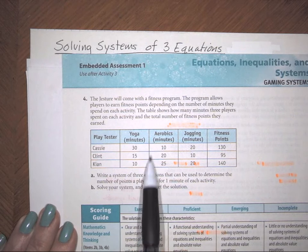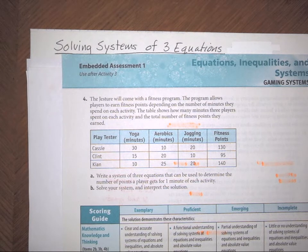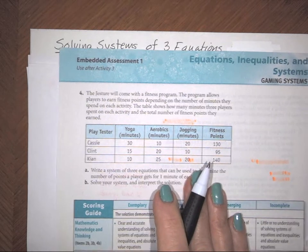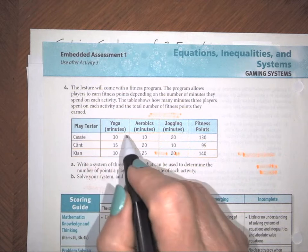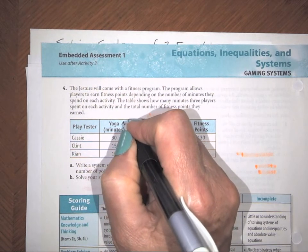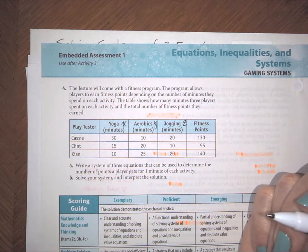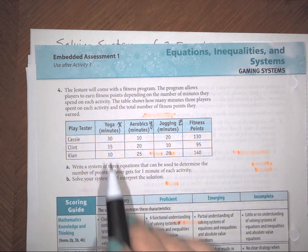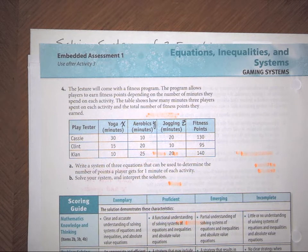On number four, you're going to have three unknowns, which we can call X, Y, and Z. And to solve that system, you're going to have to write equations, which we will be practicing today. On that Embedded Assessment, beside yoga, you're going to be finding the total number of fitness points earned for different activities. We're going to let X represent the number of points in yoga, Y for aerobics, and Z for jogging. You didn't necessarily have to use X, Y, and Z — you could have used Y for yoga, A for aerobics, and J for jogging — but if you want to be consistent, X, Y, and Z would be my suggestion.